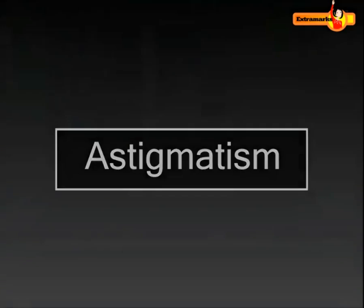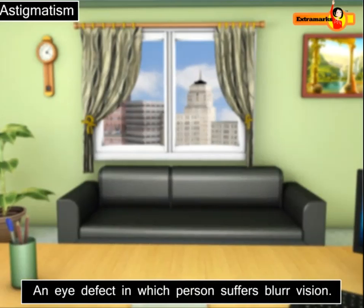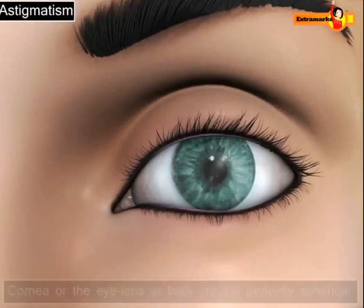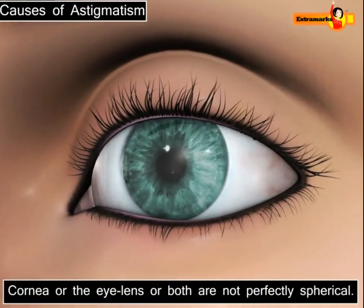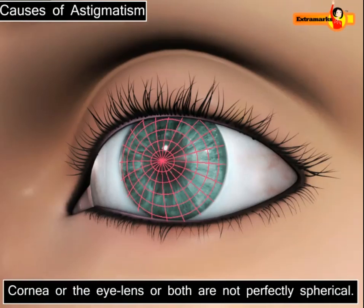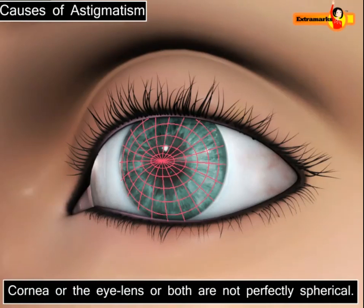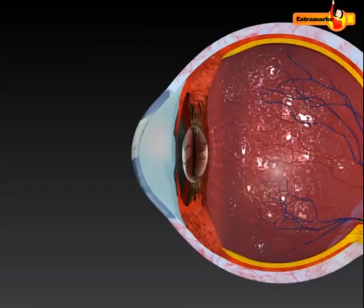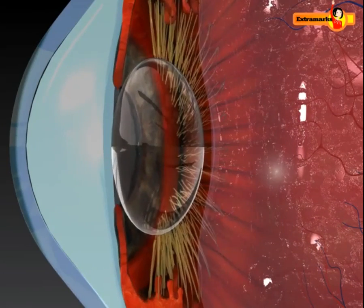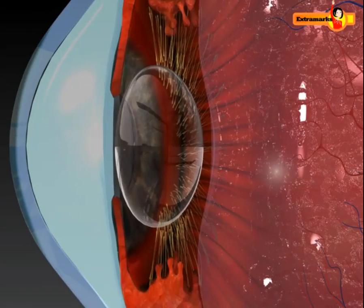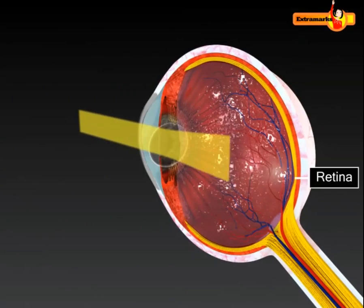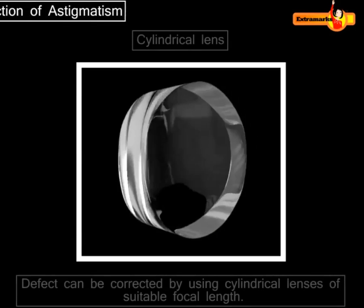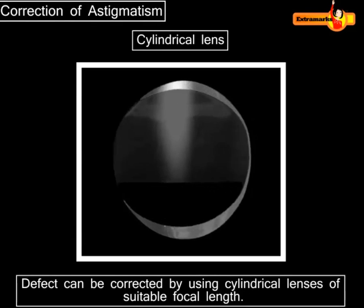Astigmatism is an optical defect in which vision is blurred. It is usually congenital but it can result from an injury. In this case, the cornea or lens is imperfectly shaped, just like a rugby football with two regular radii, one smaller than the other, thus the eye is unable to focus a point object into a sharp focused image at the retina. It is corrected by using cylindrical lenses.